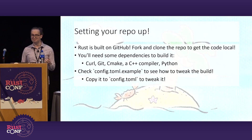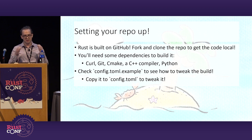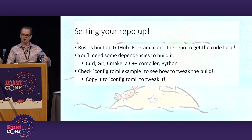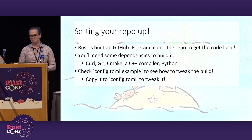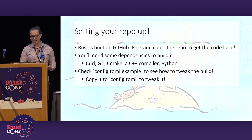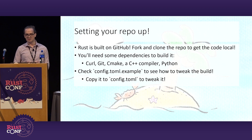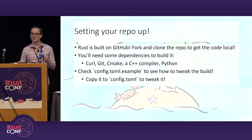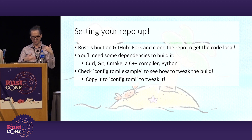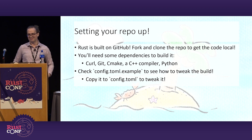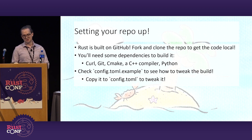This ties back to the fact that rustc is built on GitHub. There's a nice repo that you can fork and clone yourself to get the code on your machine. There are a handful of dependencies to be able to build it: curl, git, a C++ compiler — I mentioned Clang, but GCC and MSVC work too — Python, and CMake. And there's a configuration file kept in the repo as config.toml.example, which has all of the documentation for what each knob and option does. When you want to tweak it for yourself, copy it in as config.toml and tweak away — that'll affect your compile process.